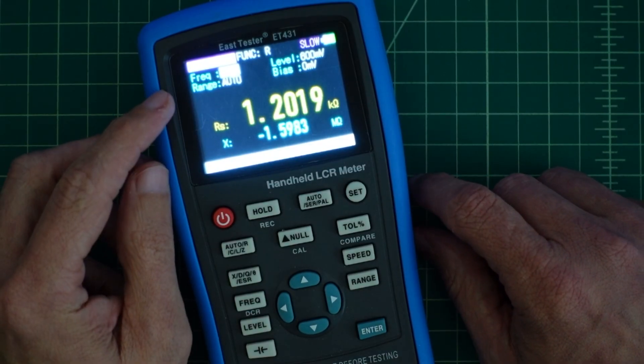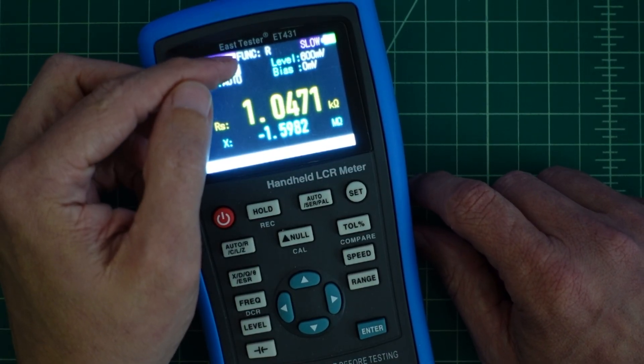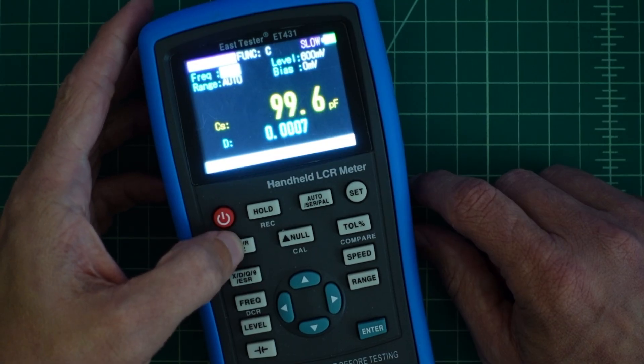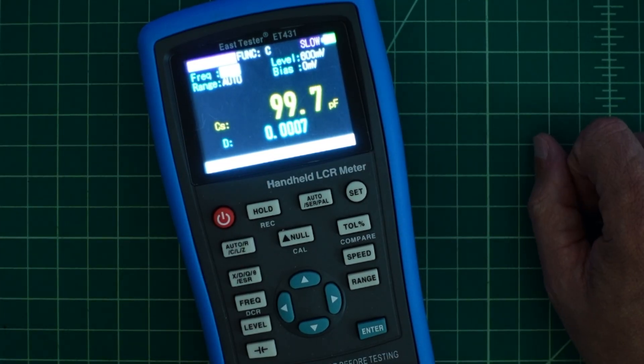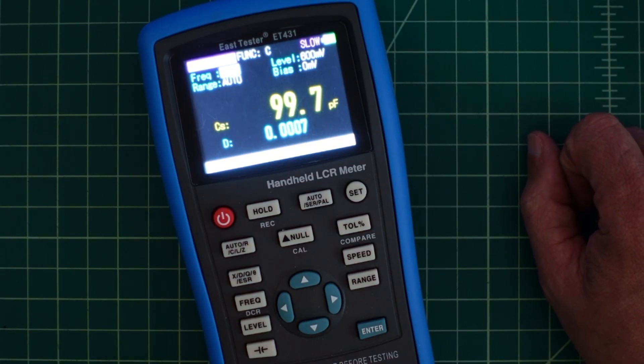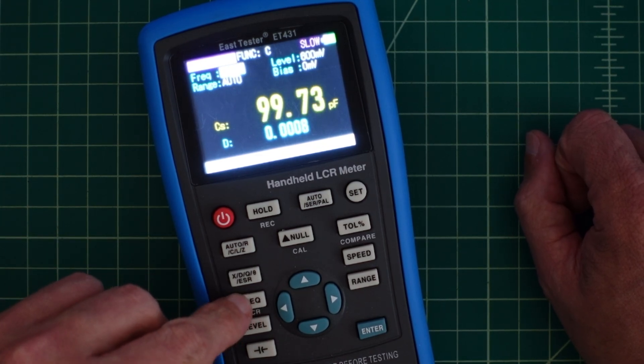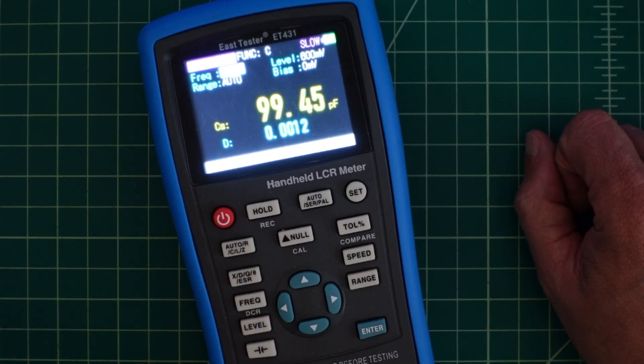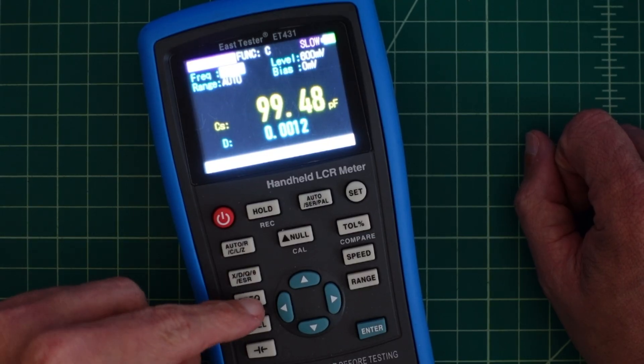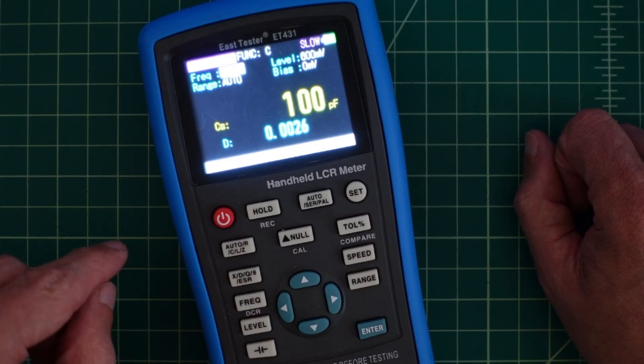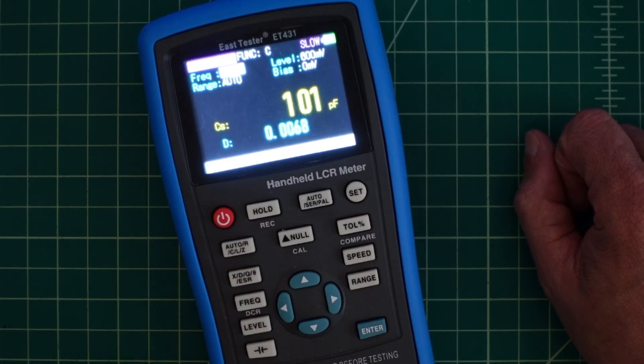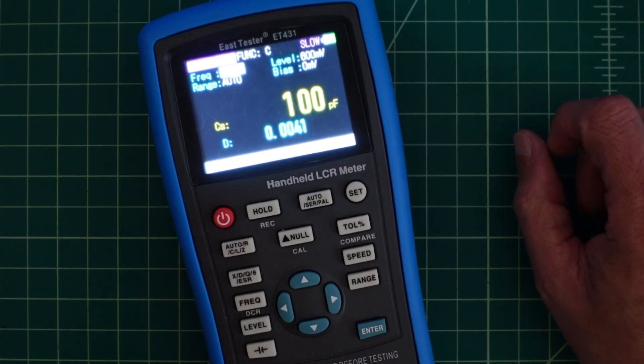So right now it's testing at one kilohertz. The function is resistance and we don't want that, so I'm going to go ahead and change that to capacitance. You can see our capacitor is reading somewhere around 99.7 picofarads. Now if I adjust my frequency to 10 kilohertz it will change a little bit, and when I go to 100 hertz which is a little lower it changes again, so it's right around 100 picofarads. It's bouncing around between 100 and 101.